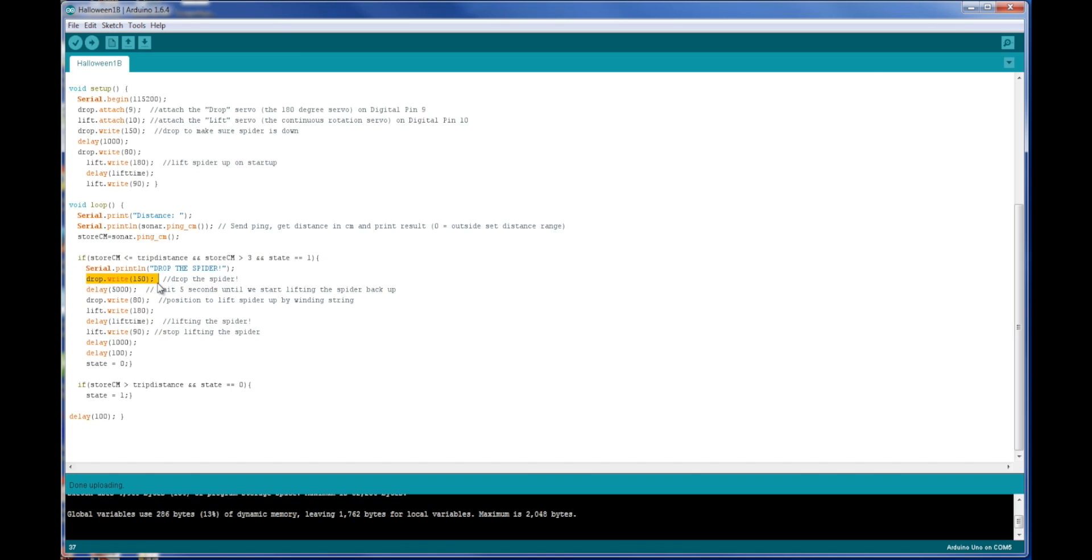The code is pretty simple, though. We just angle that servo down, sort of dumping the bucket, dumping the string off the spool. We wait five seconds before we start winding it back up. And then we just position the lift sensor, we position the servo back upright, and we start winding it up again for that lift time, and that's it.